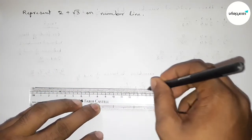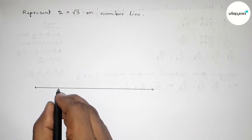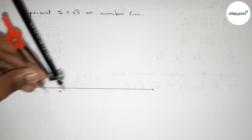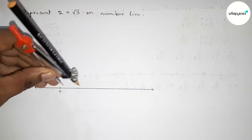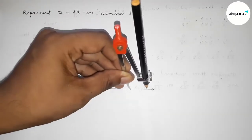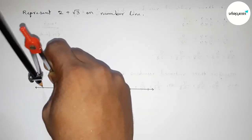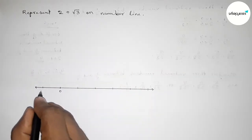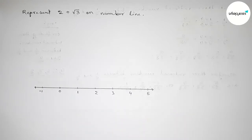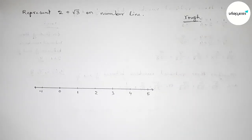Drawing a line of any length and taking arrow marks on both sides. Taking zero here, then by using a compass and taking any length, marking the numbers on the line. The length of the compass is one unit length. So making a number line: minus 1, then 1, 2, 3, 4, 5, and continuing.